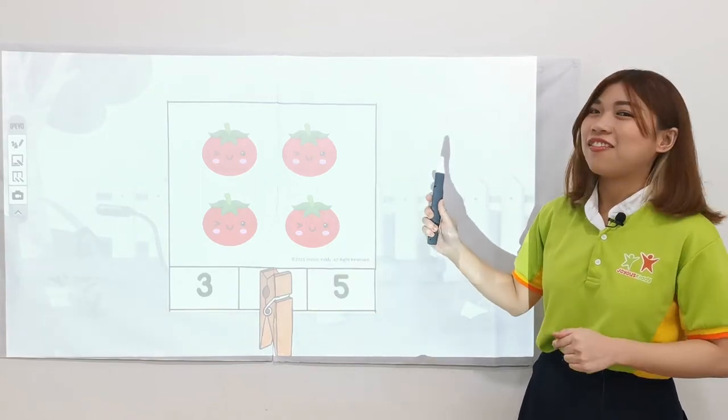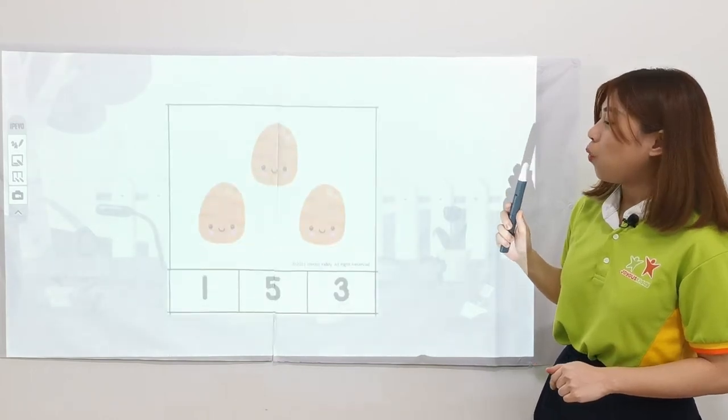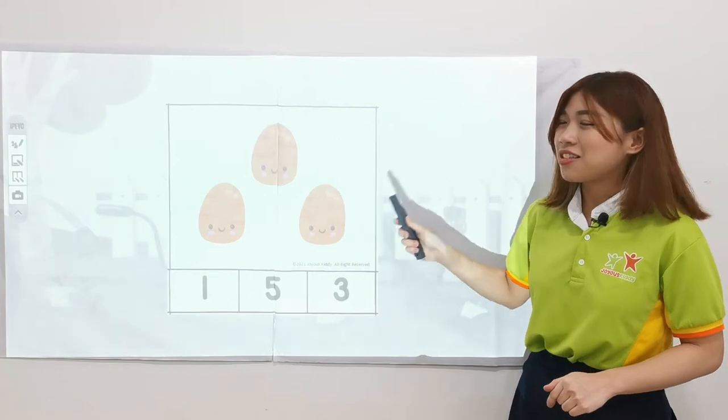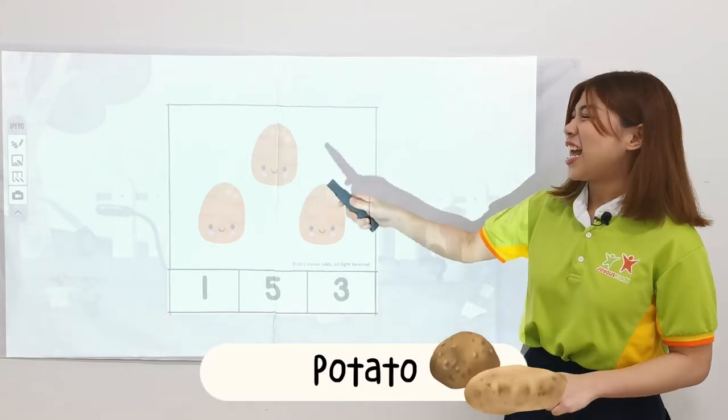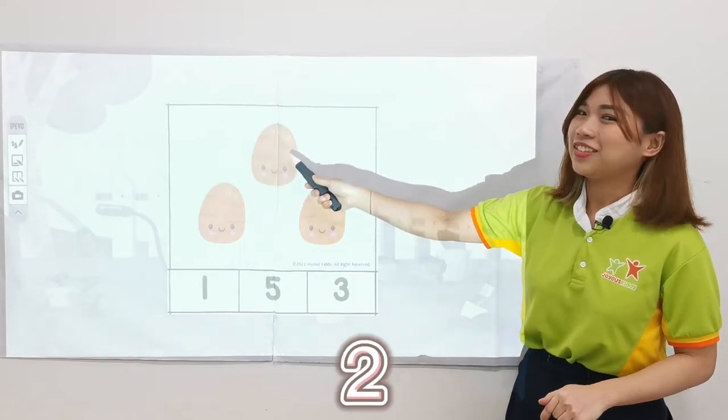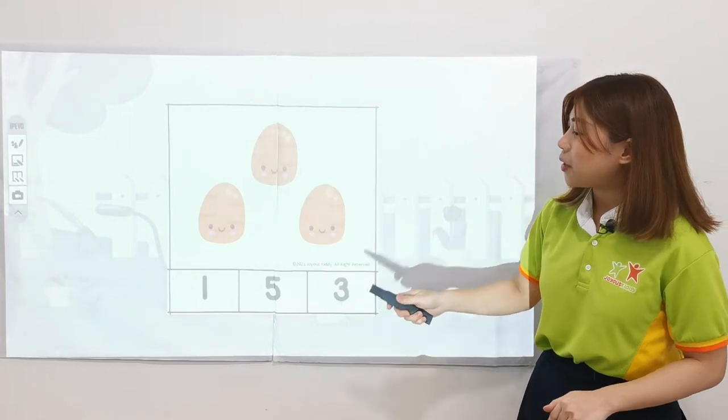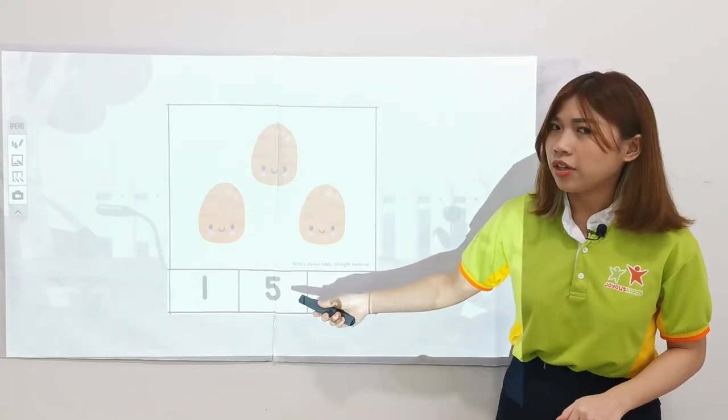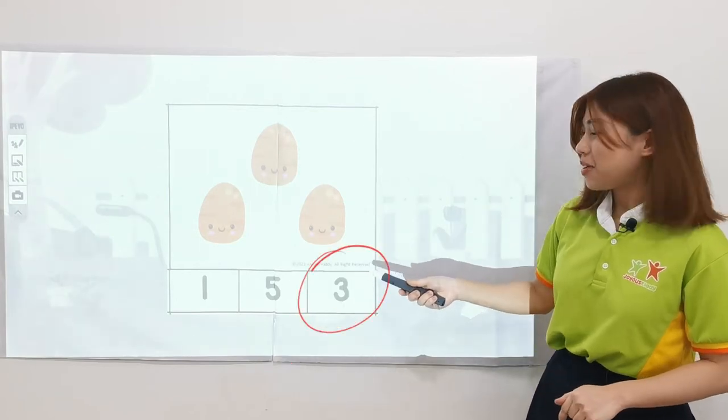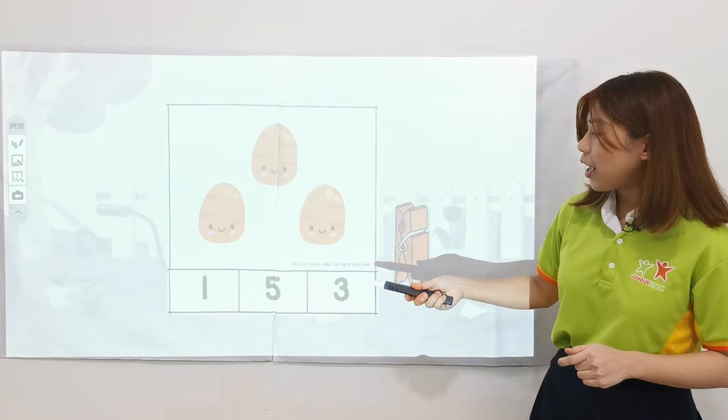Alright, so now let's move to the next one. Oh wow! Look! What do we have? This is potatoes! And let's count how many potatoes do we have? 1, 2, 3. We have 3 potatoes! And let's find number 3! Is this number 3? Hmm, no, no! This is number 5! This is number 3! So you may take out your clothespin again and put at the correct number.